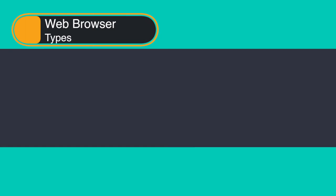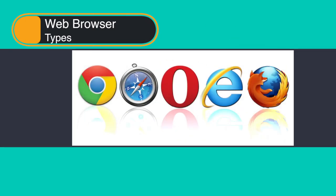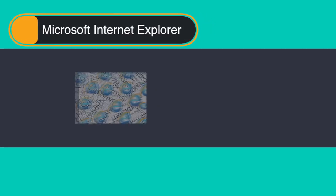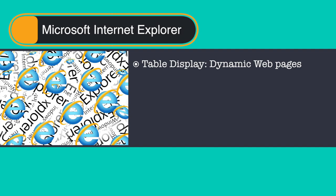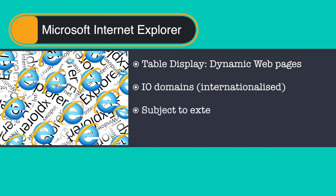Let me take you through the popular types of web browsers, though we discussed these in the previous module. The first is Microsoft Internet Explorer. Since its first release, it has added features and technologies such as basic table display, which aids creation of dynamic web pages, and internationalized domain names which allow websites to have native language addresses with non-Latin characters. This browser has also been subject to review throughout security and privacy vulnerabilities. The latest stable release is Internet Explorer 11, available as a free update for Windows 7 onwards.